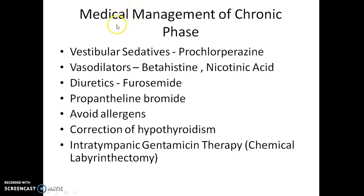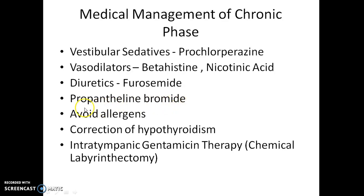For the chronic phase of Ménière's disease, give vestibular sedatives like prochlorperazine, vasodilators like betahistine and nicotinic acid, and diuretics like frusemide. Propantheline bromide can also be given. The patient should avoid allergens, and hypothyroidism if present should be corrected.